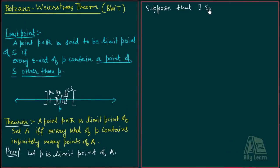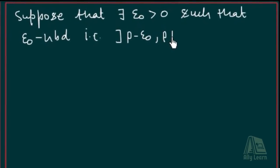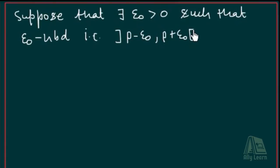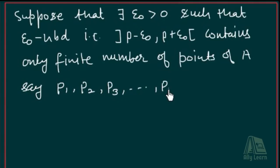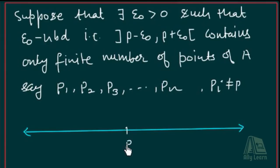Let me prove this by contradiction. Suppose there exists epsilon-naught greater than 0 such that the epsilon-naught neighborhood, that is (P minus epsilon-naught, P plus epsilon-naught), contains only a finite number of points of A. Say these points are P1, P2, P3, ..., Pn, which are different from P.